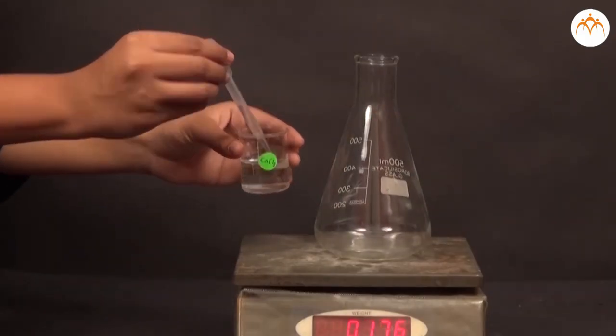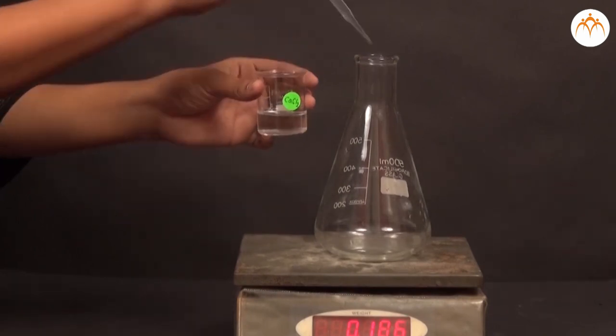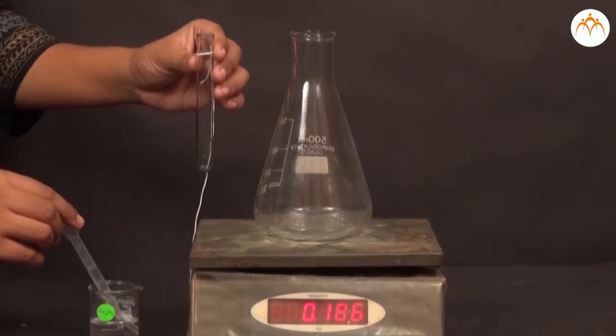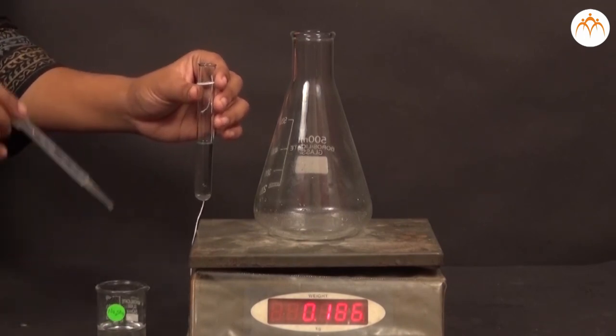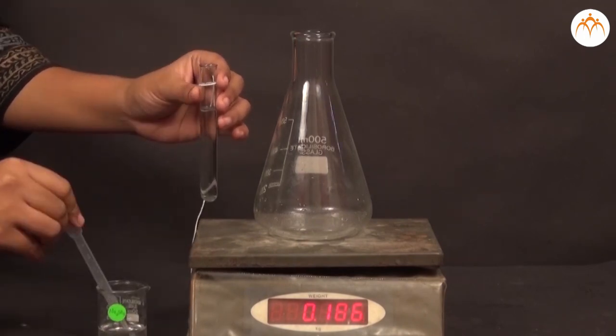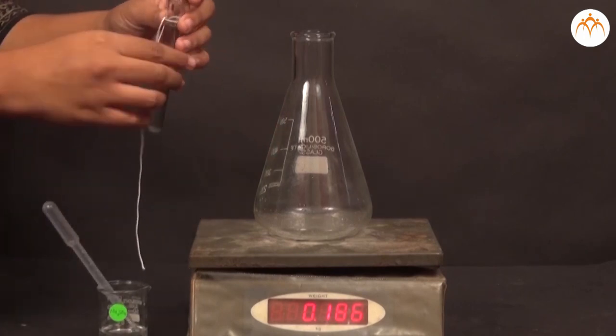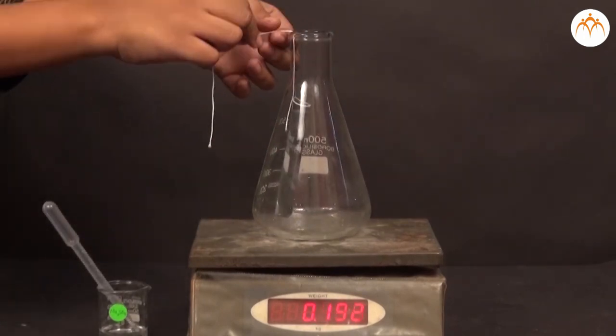We will first take solution of calcium chloride in a conical flask, then take sodium sulphate in a test tube. We will tie a thread to the test tube and release it in the conical flask, then fix a rubber cork on the conical flask.